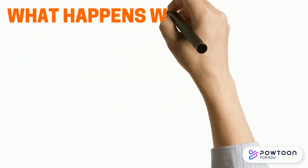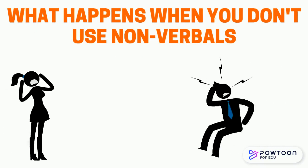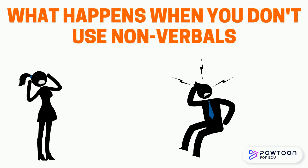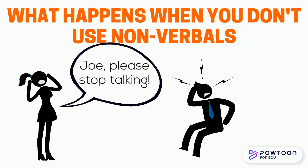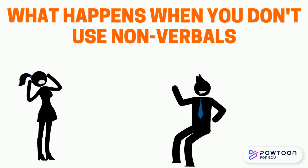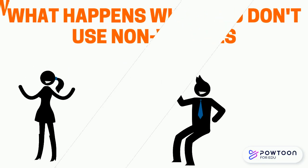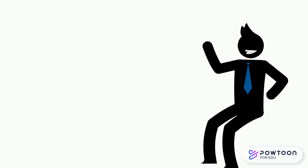To answer this question, let's first look at what happens when you don't use nonverbals. Here we have a teacher with a student who is not paying attention. She says something like, "Joe, please stop talking. I need you to pay attention." The teacher has singled out Joe in front of his classmates. If Joe stops talking and gives his attention to the teacher, everything is fine. But this situation could easily go sideways. All students have pride — when singled out in front of their peers, even by a well-meaning teacher, a student's pride can be hurt.